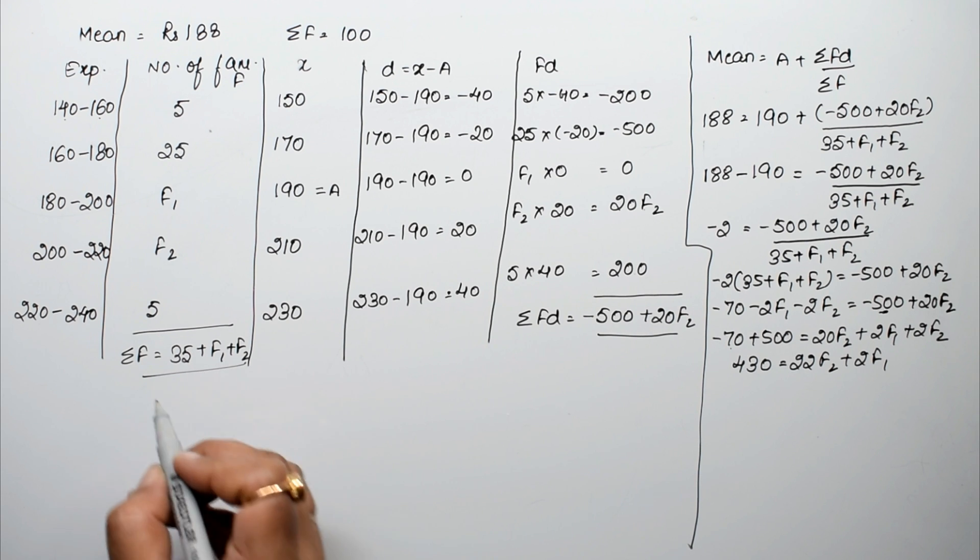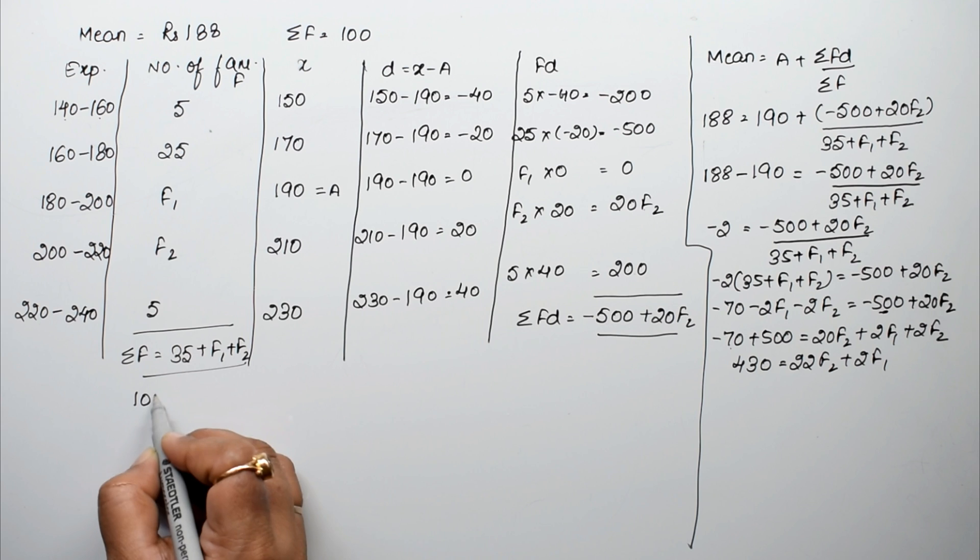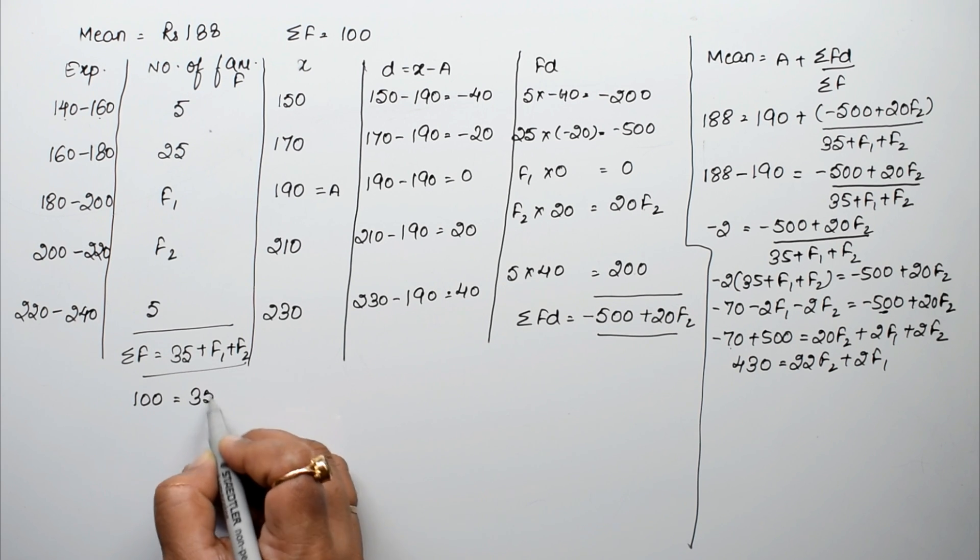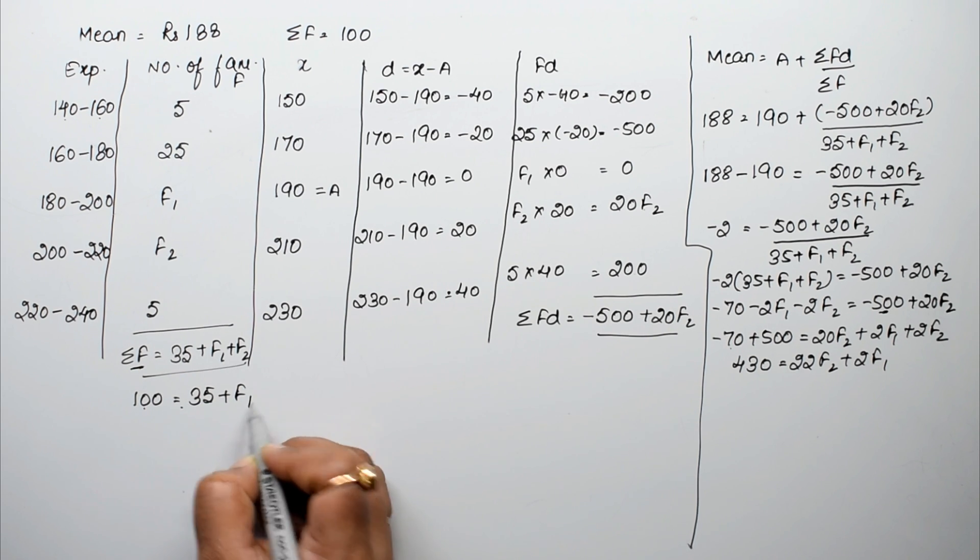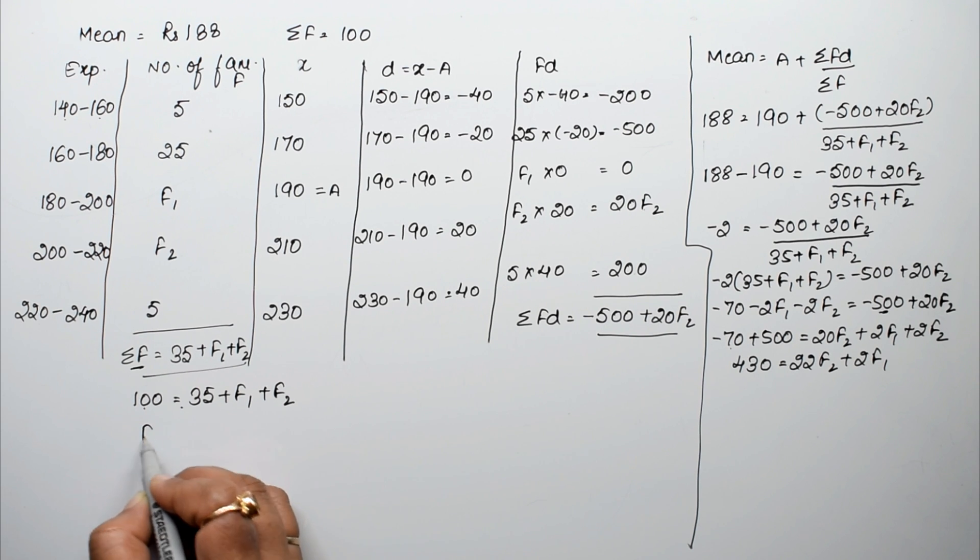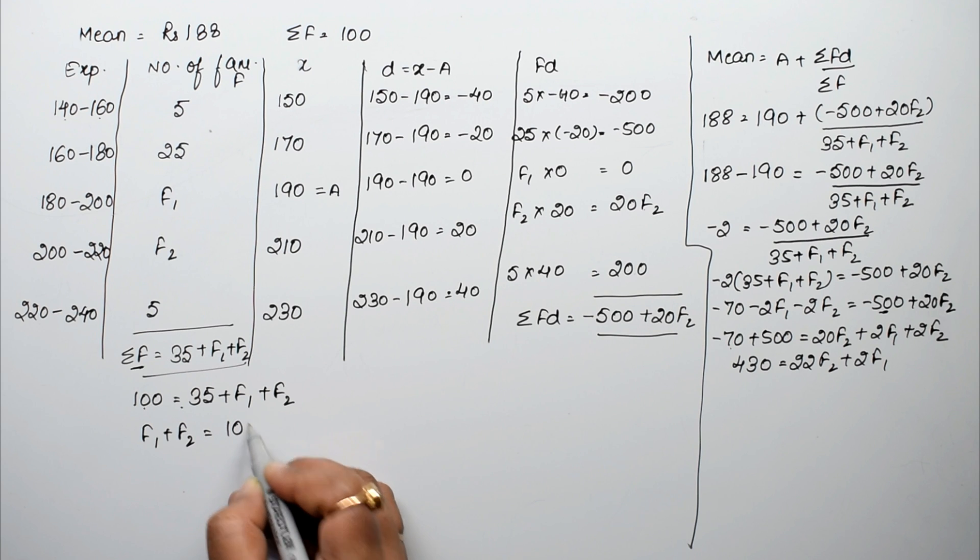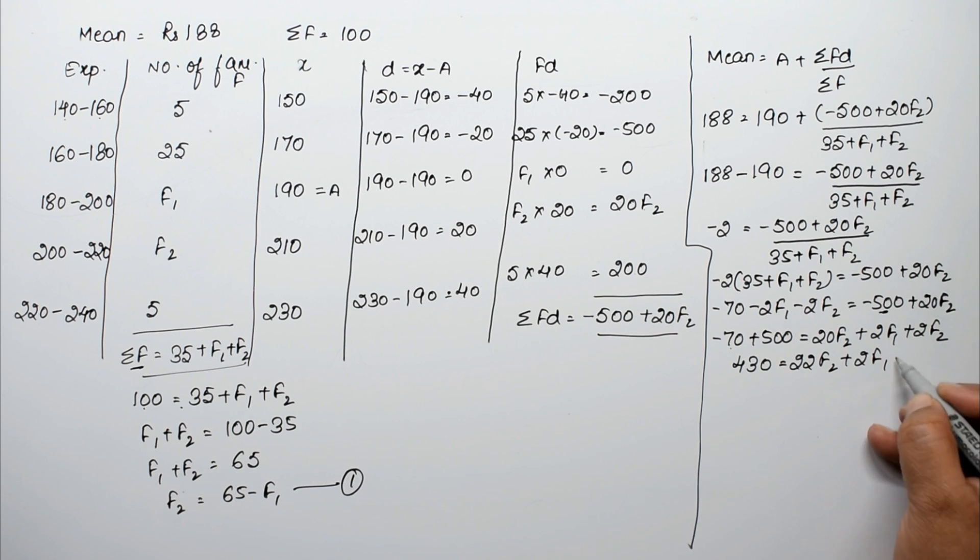Simplifying, minus 70 plus 500 gives 430 equals 22F2 plus 2F1. This is our first equation. Now, we know sigma f equals 100, so 100 equals 35 plus F1 plus F2, which means F1 plus F2 equals 65.